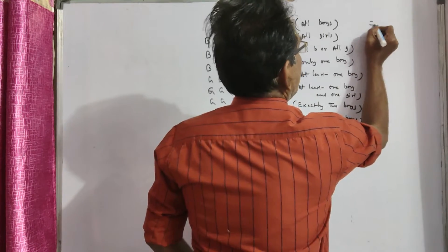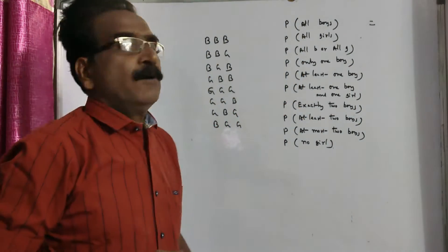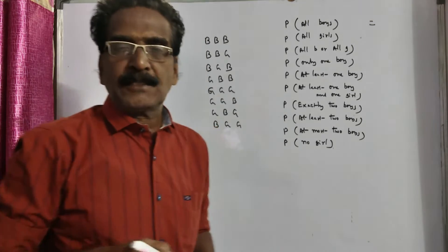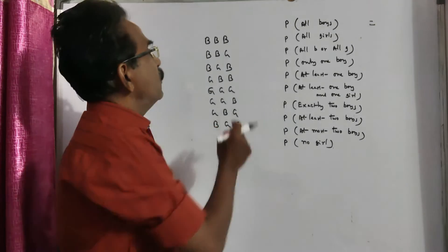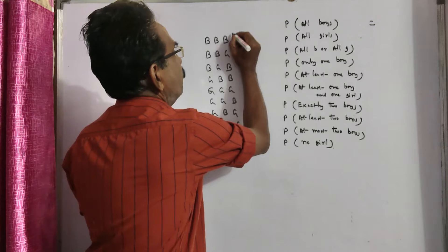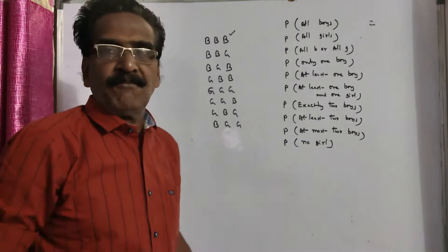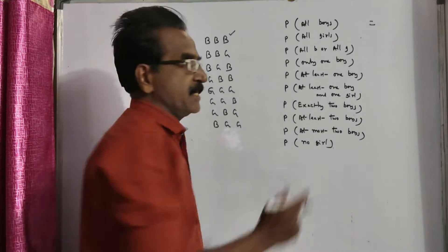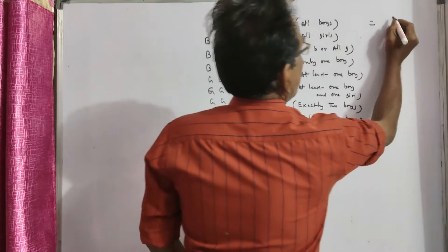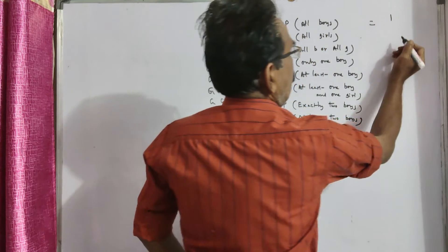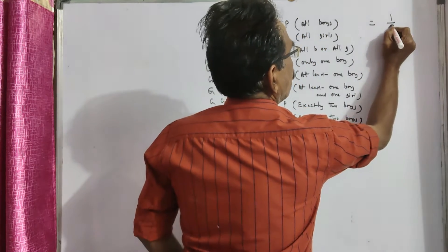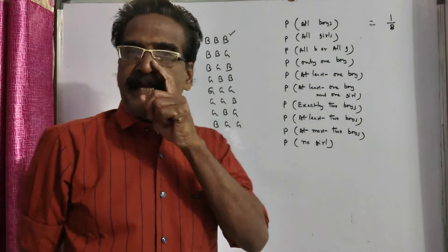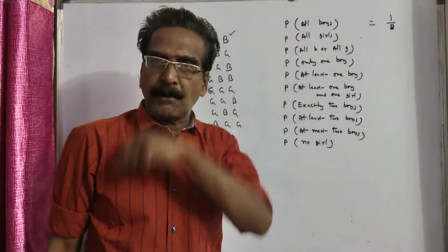First one: probability of all boys — all three children are boys. We have only one outcome where all three children are boys. So the required probability is favorable outcomes one, total number of outcomes eight. So one by eight is the required probability.